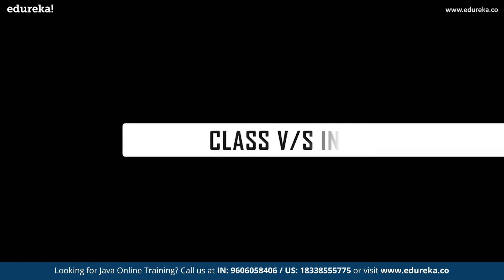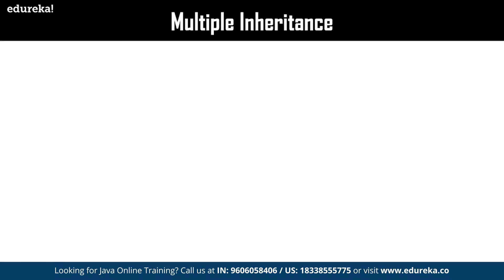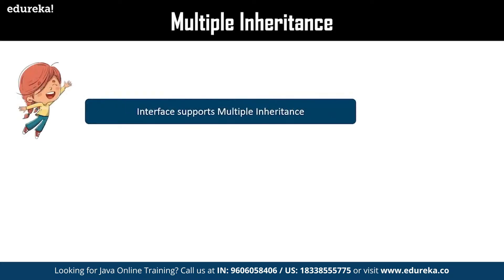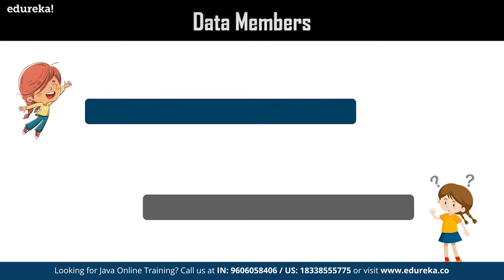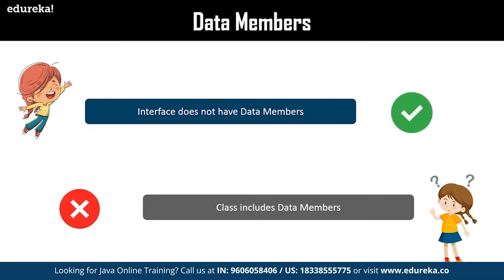Now let us find out a few differences between class and interface. The first difference is multiple inheritance — interface was designed to provide multiple inheritance, whereas classes cannot. The next difference is data members — interface does not have data members; all it includes is methods, which decreases the probability of confusion during implementation. On the other hand, classes include data members, meaning the user must be careful while using them to avoid ambiguity.